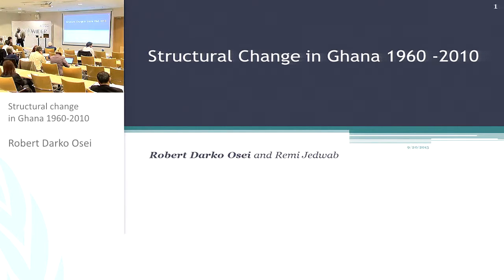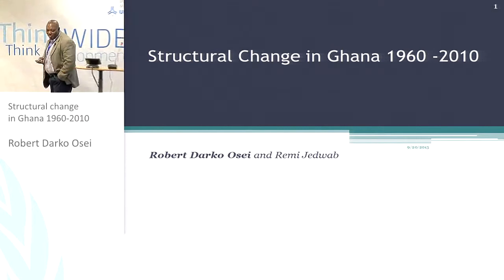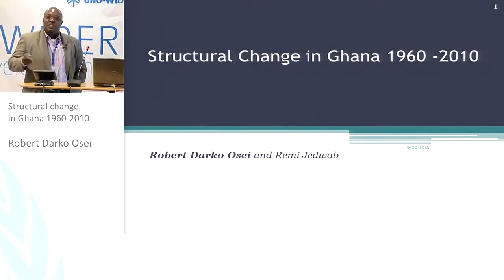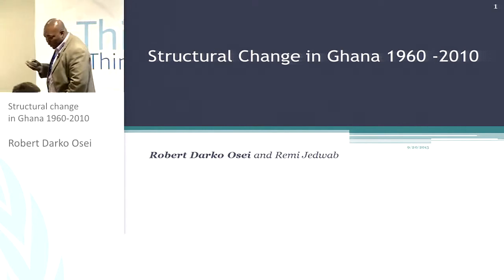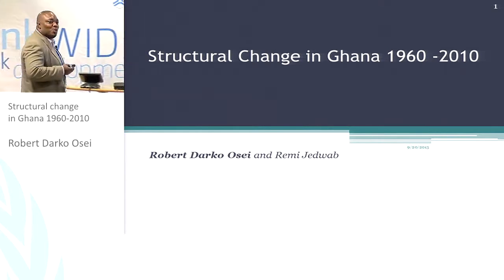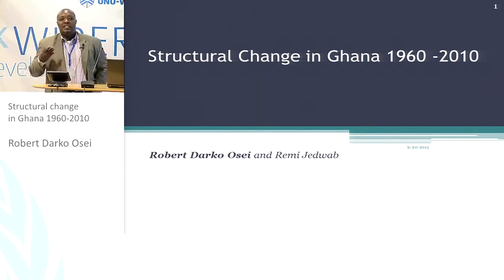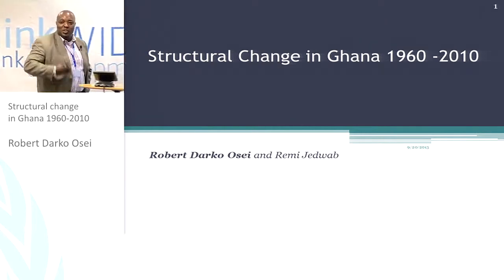When one looks at economic performance in Africa today, Ghana will usually be talked of as the quote-unquote class act. But also interesting is the fact that Atta Lewis, who is very well known for his work on the dual economy models, was an advisor to the first president of independent Ghana, and it is reported that Lewis actually advised Ghana against the path that he chose at the time.